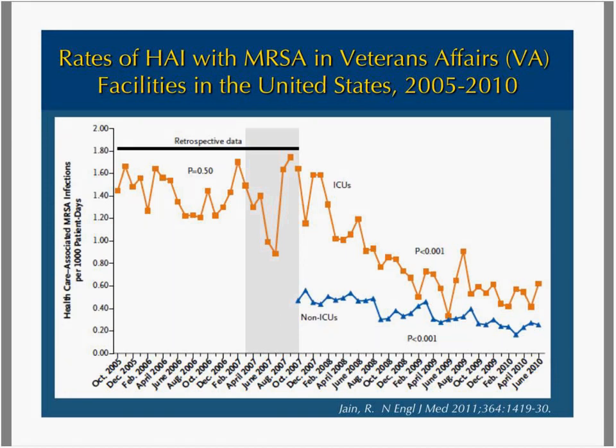Finally, here is a summary slide from Jane et al.'s article published in the New England Journal in 2011. This was a nationwide study looking at healthcare-associated MRSA infections where they employed many infection prevention strategies, and there was also some culture change with utilization of positive deviance. The result was a decrease in MRSA in ICUs as well as in non-ICU settings.